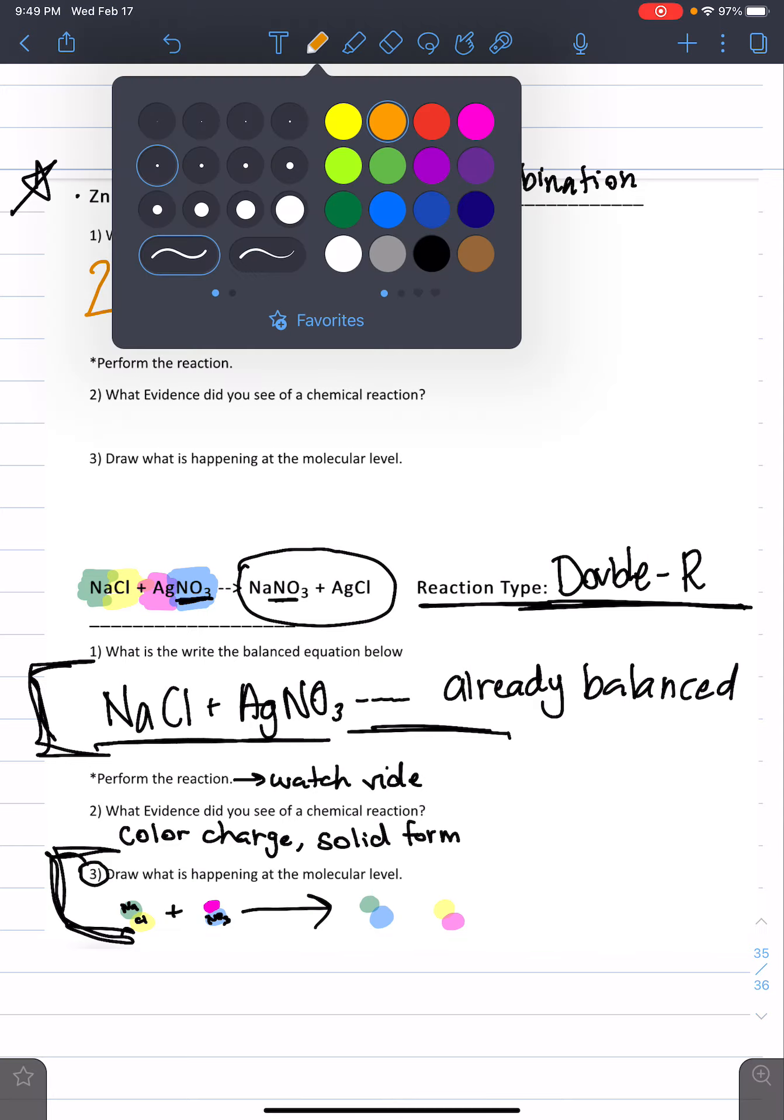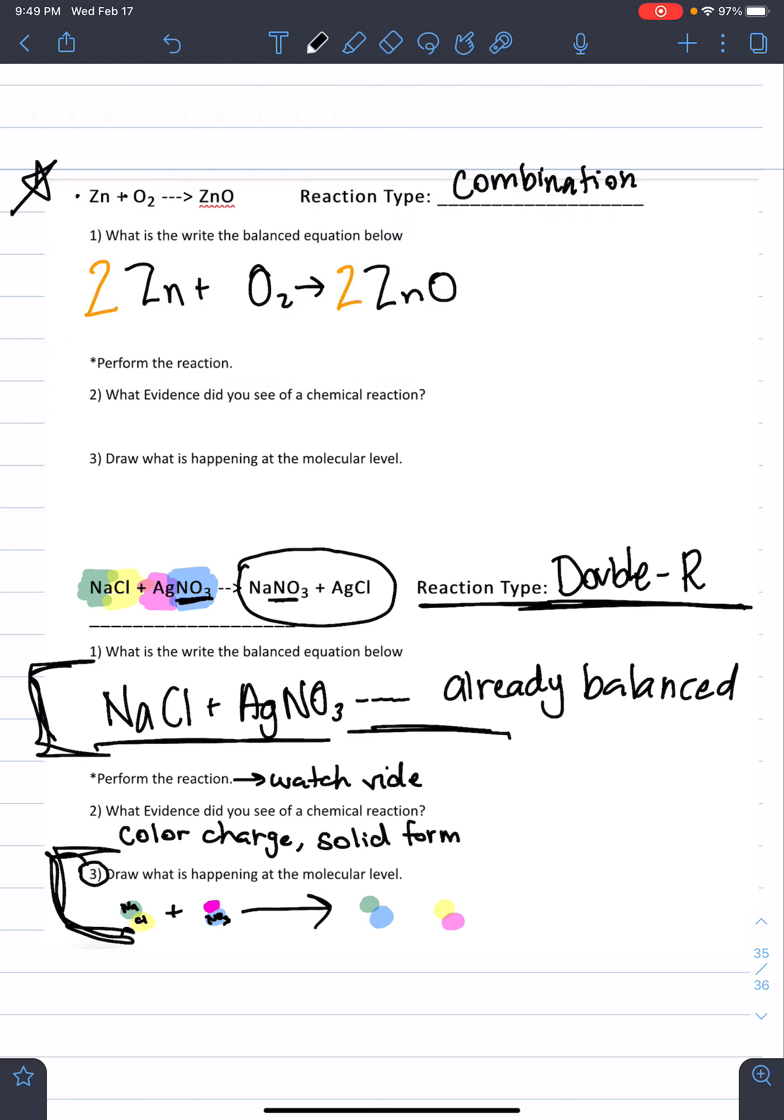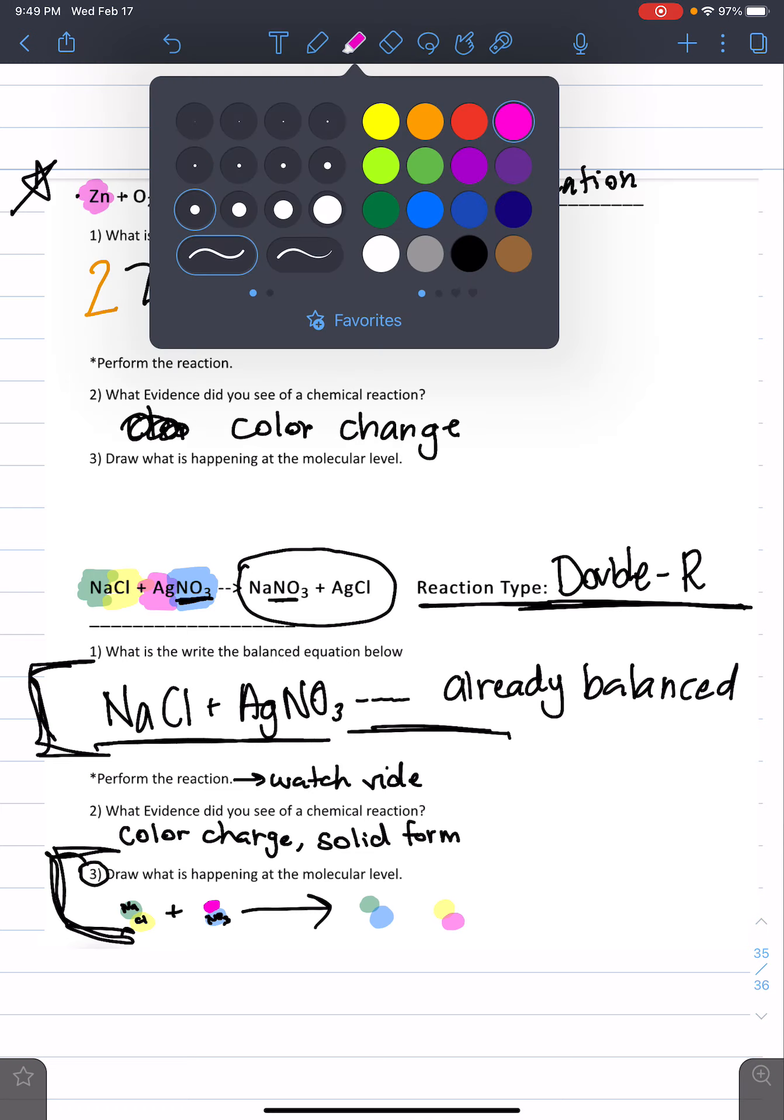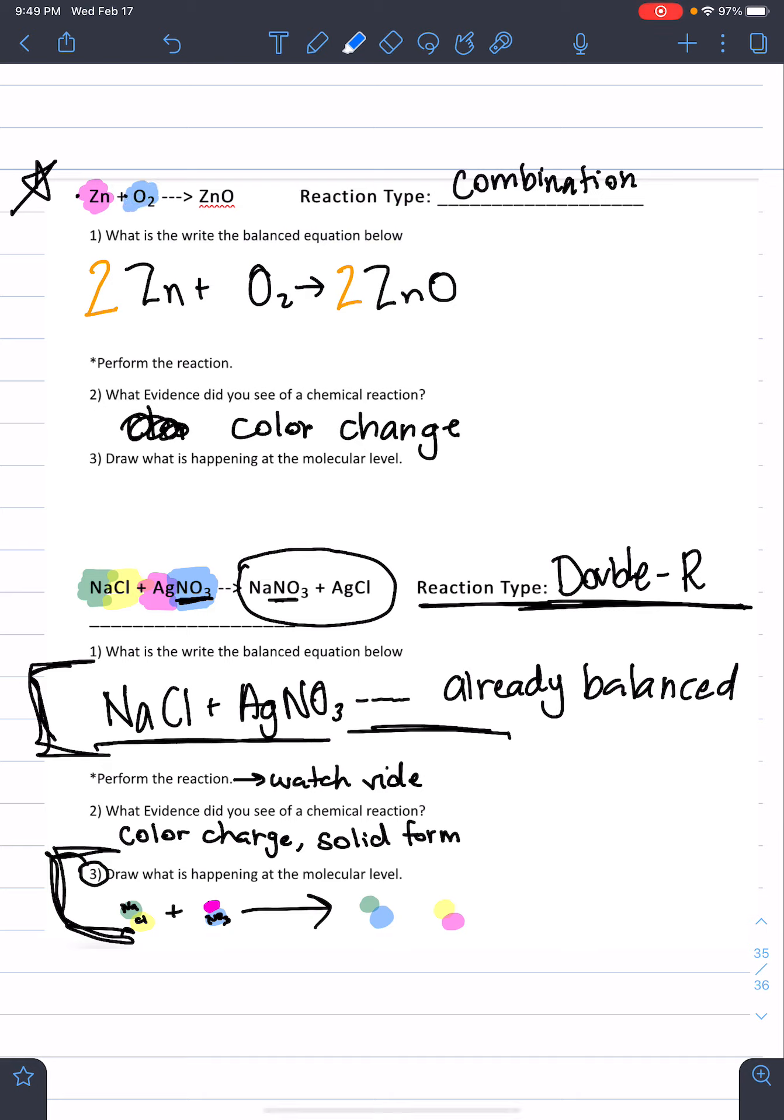So, then again, you'll perform the reaction. You'll watch that on the screen. You'll see that the flame changes color. So, again, this is like a color change. Hard to talk and write. So, this is a color change. Hopefully you saw that a little bit on the video. I know the video is hard for this one. And then number three, the hard part is going to be drawing what happens. So, again, this one, we only need two different colors. So, let's assign maybe Zn will be pink. And let's do O as the blue.